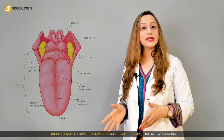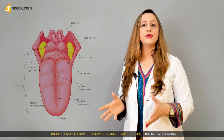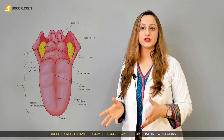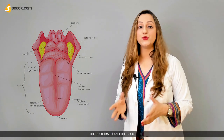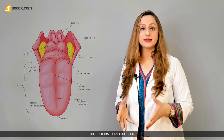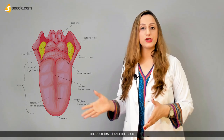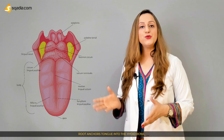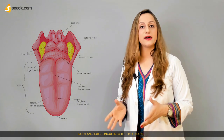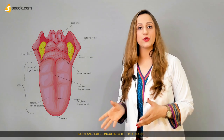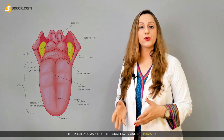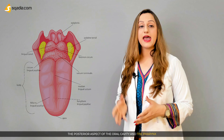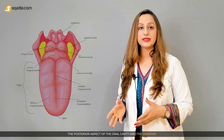The tongue is a mucosa-invested, movable muscular structure that has two regions: the root or base, and the body. The root anchors the tongue into the hyoid bone, the posterior aspect of the oral cavity, and the pharynx.